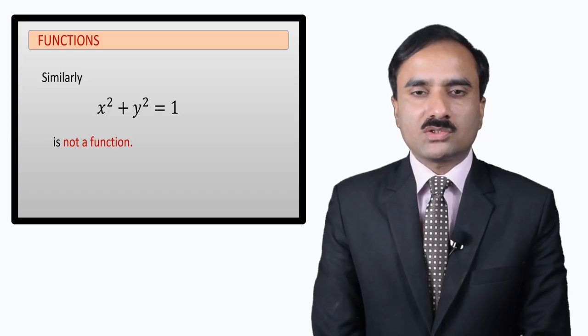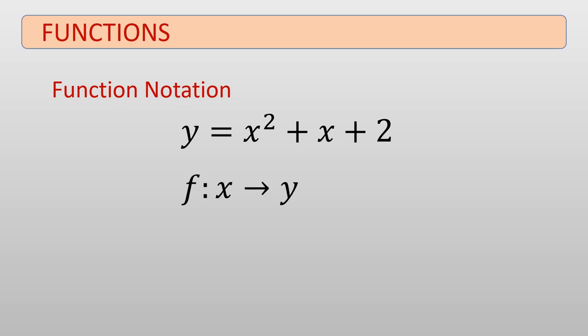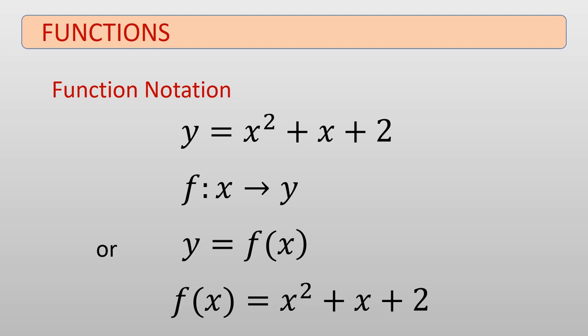Now let's talk about function notation. Starting with the function y equals x squared plus x plus 2 — this function associates each value of x to a unique value of y. We write it as a function f from x to y, or y equals f of x, or f of x equals x squared plus x plus 2.